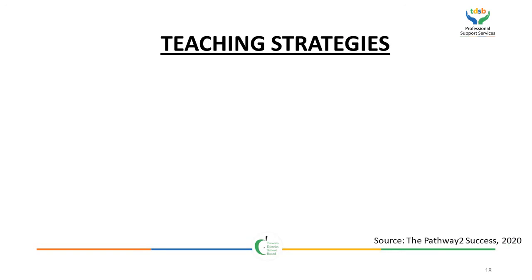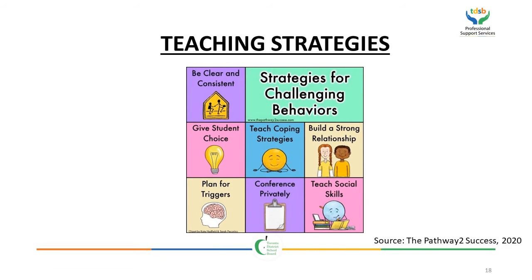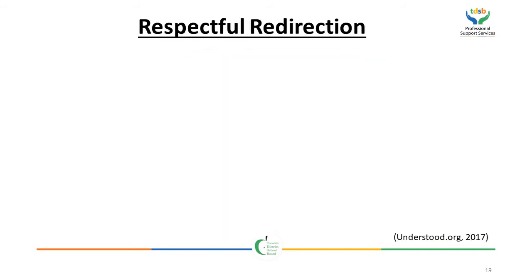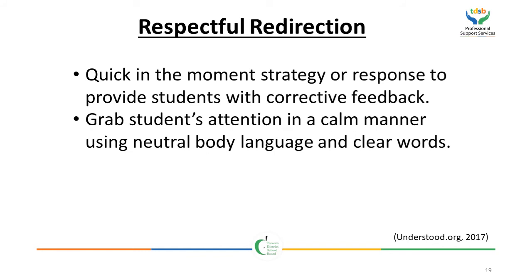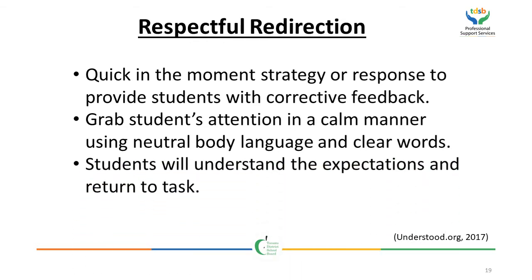Teaching strategies for challenging behaviors: be clear and consistent with regards to expectations; give students fixed choices; teach coping strategies; build a strong relationship with students; plan for triggers that may occur; conference privately with the student; and teach social skills. Respectful redirection is a quick, in-the-moment strategy or response to provide students with corrective feedback. It grabs the student's attention in a calm manner using neutral body language and clear words, so students understand expectations and return to task.